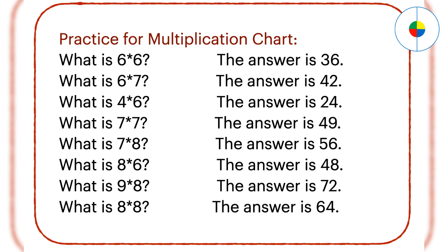What is 8 times 6? 8 times 6 is the same as 6 times 8. Any number times 8, you can split 8 to 9 minus 1. So 6 times 8 is (9 minus 1) times 6. Using the distributive property: 6 times 9 is 54, and 6 times 1 is 6. Subtract 6 from 54: 54 minus 6 is 48. The answer is 48.